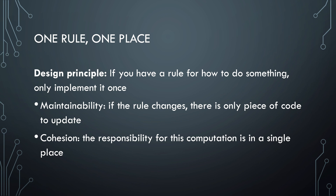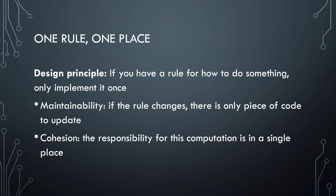Both strategy and bridge are good examples of the principle that if you have a rule to do something, you implement that rule only once. If the rule changes, you only have to update a single piece of code, and the responsibility for the computation resides in a single place. Bridge and strategy both define once what the interface is for each variation. The actual implementations are defined using that variation — they are independent from each other, defined only once, and they do a single job. This concludes the video about the bridge pattern. If you have any questions, post them in the teams channel of the course. Thanks for watching. The next clip will be about yet another design pattern: Abstract Factory!